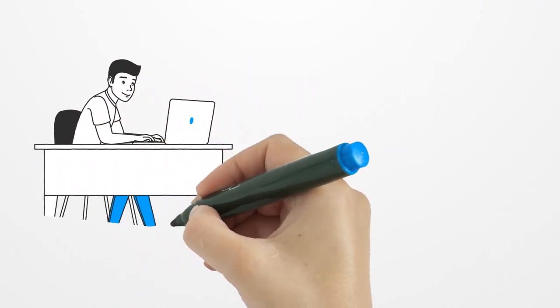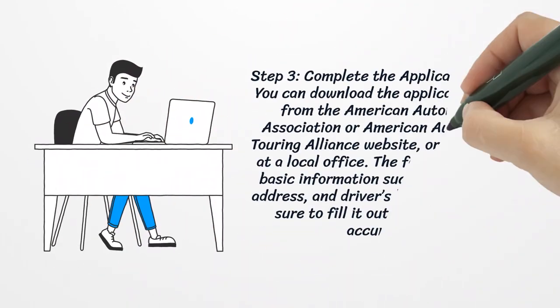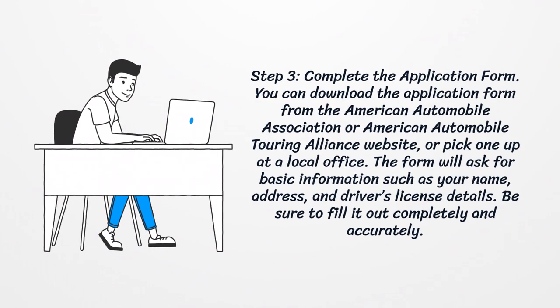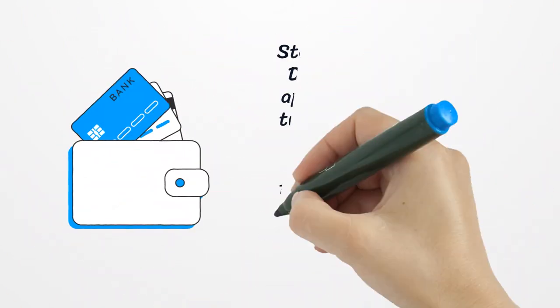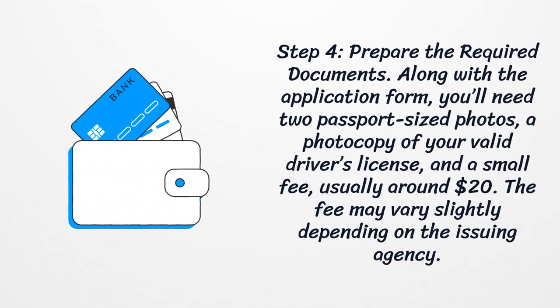Step 3: Complete the application form. You can download the application form from the American Automobile Association or American Automobile Touring Alliance website, or pick one up at a local office. The form will ask for basic information such as your name, address, and driver's license details. Be sure to fill it out completely and accurately.